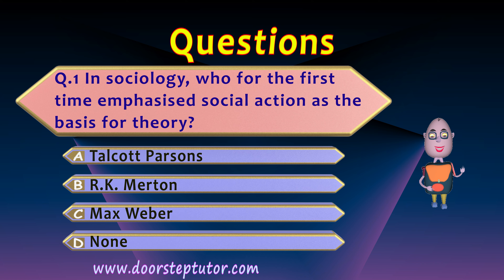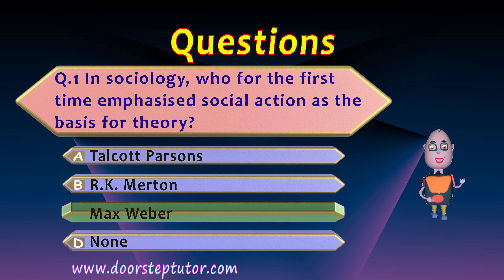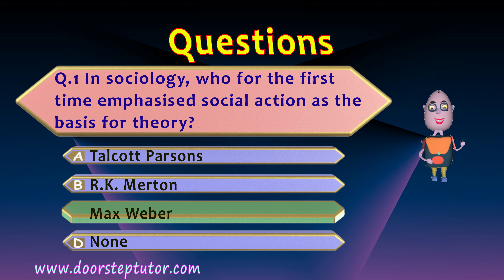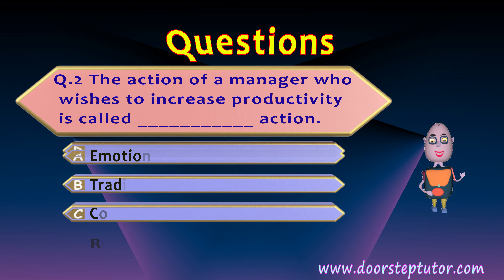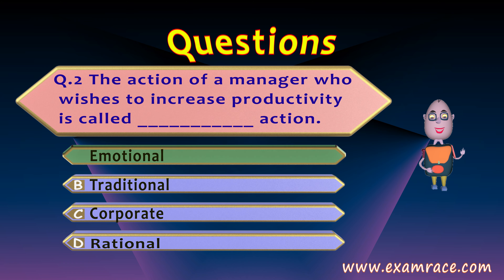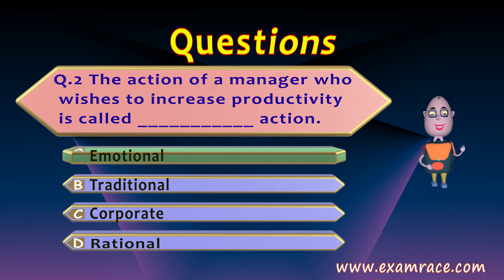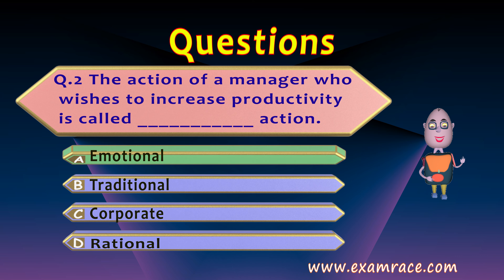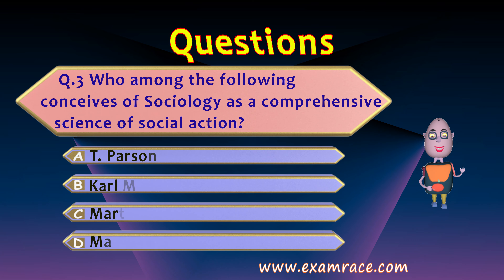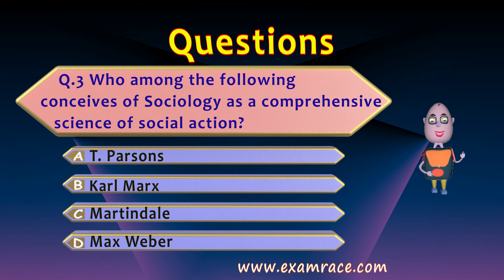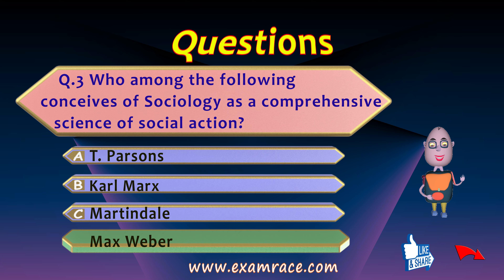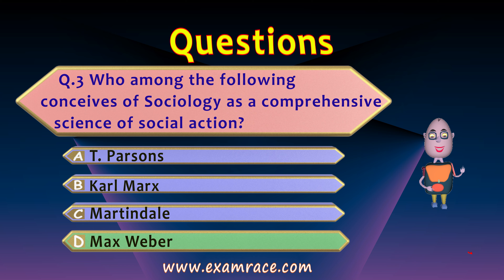Let us discuss some questions. Max Weber was the first thinker who emphasized social action as the basis of theory in sociology. Next question: the action of a manager who wishes to increase productivity is called what kind of action? The answer will be emotional, because in order to increase productivity, he will motivate and encourage his workers and also feel motivated himself to perform better. Last question: who among the following conceives of sociology as a comprehensive science of social action? The answer will be Max Weber, who talked about the interpretive and comprehensive science of social action.